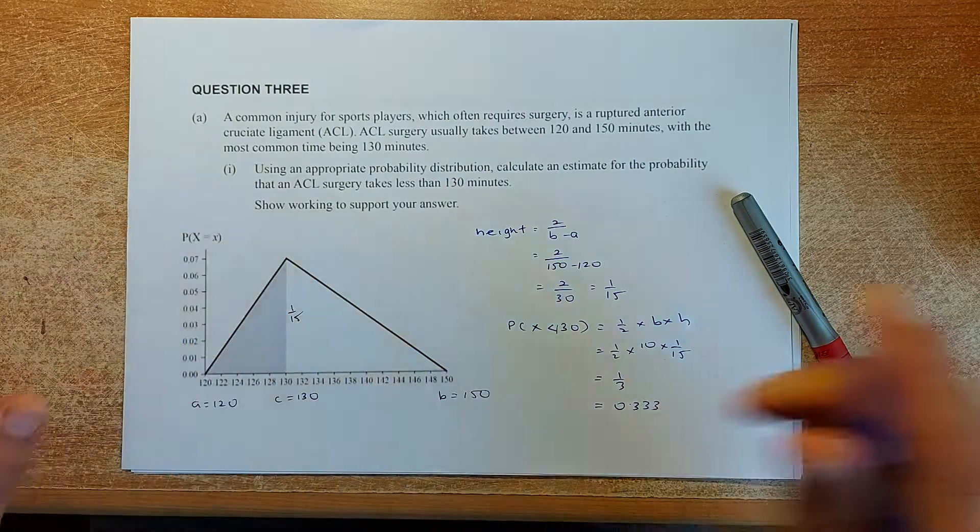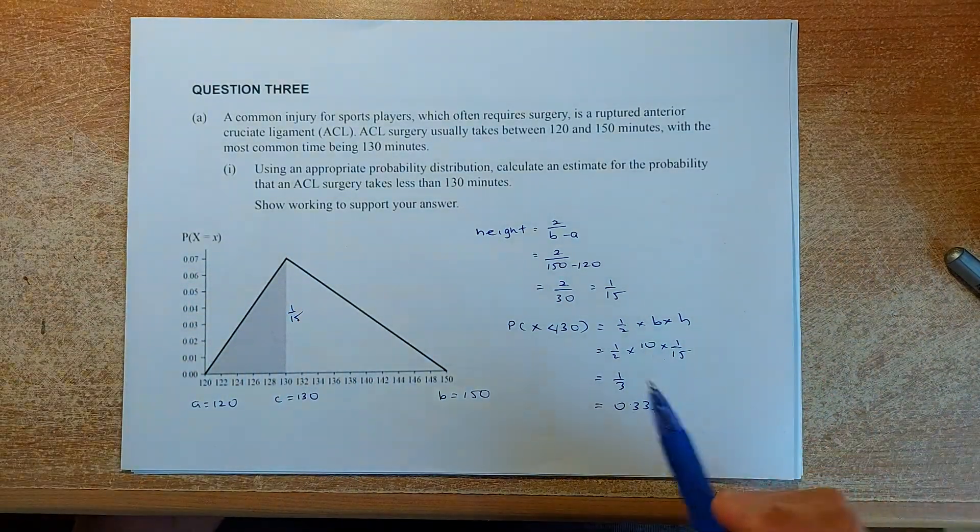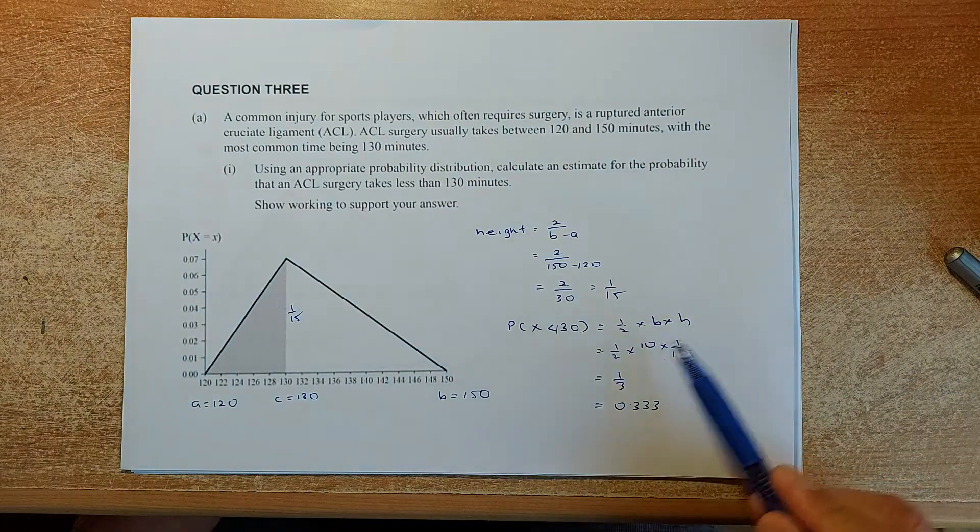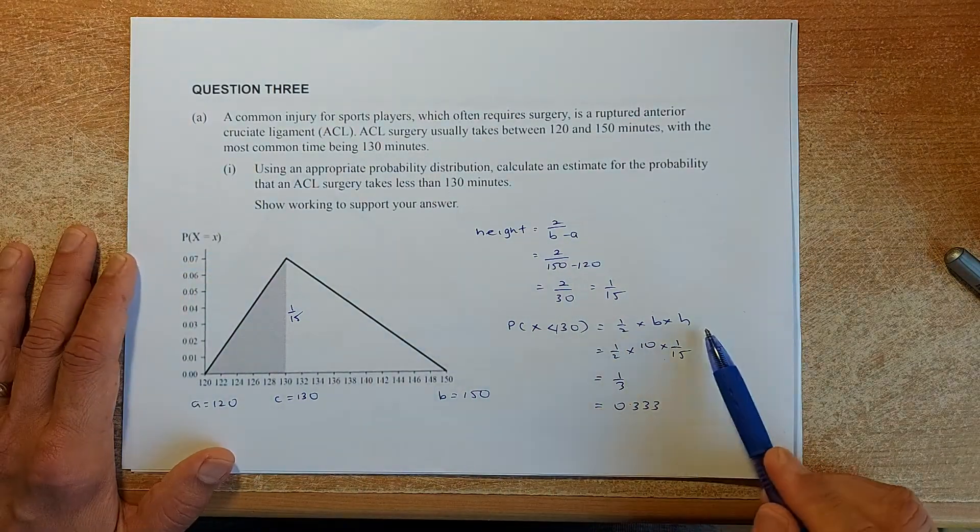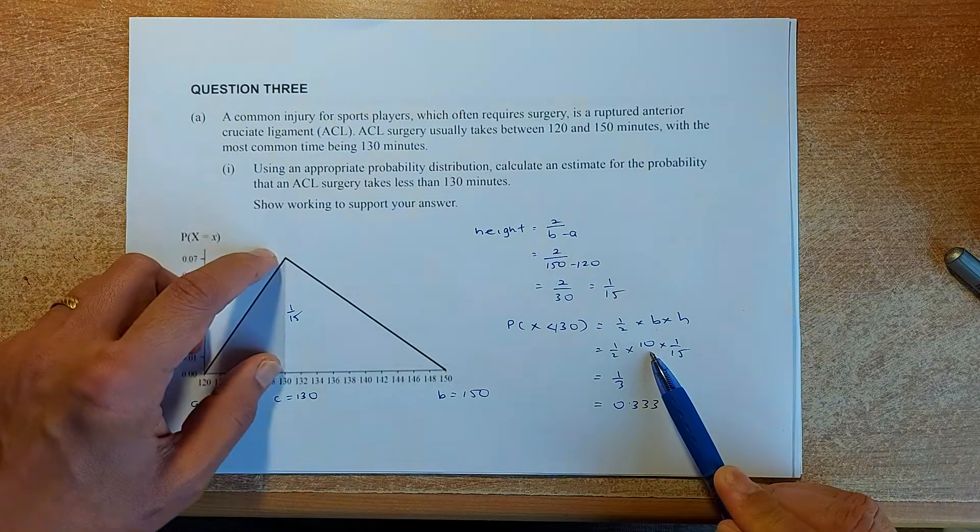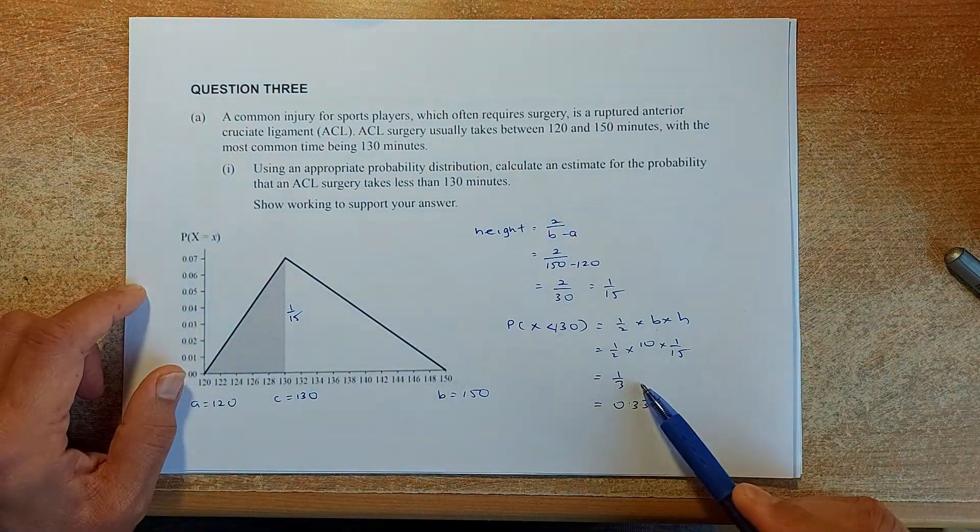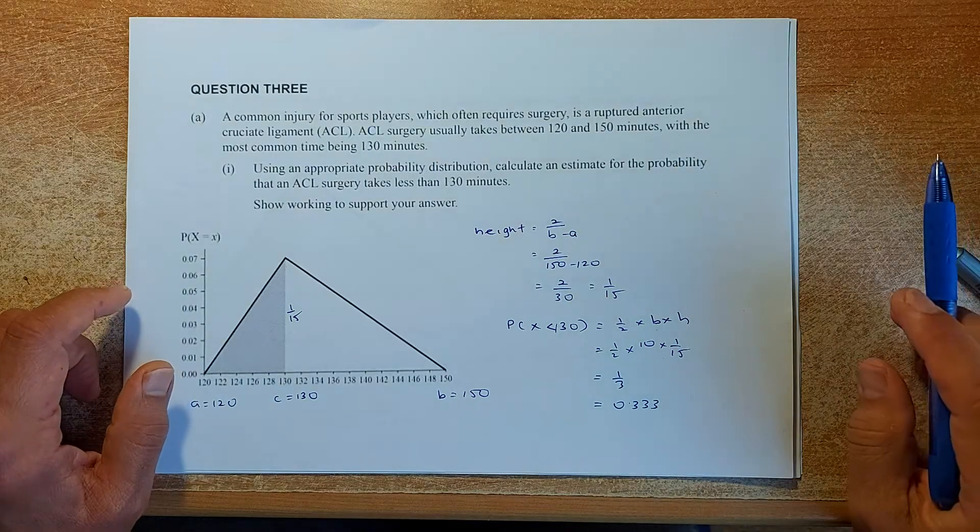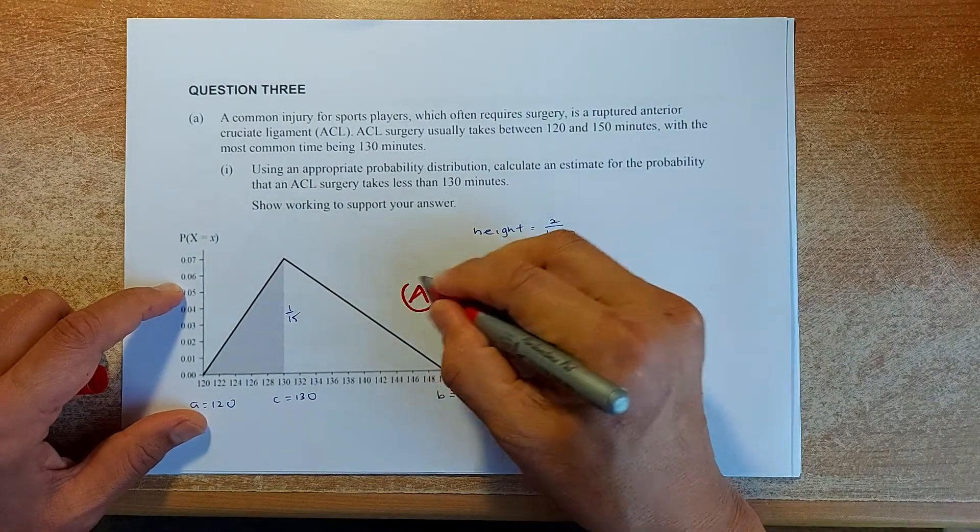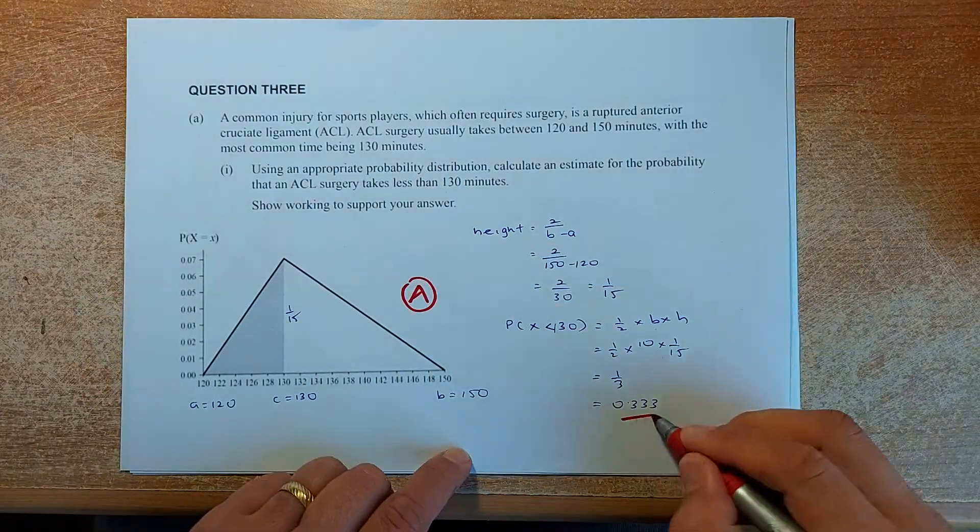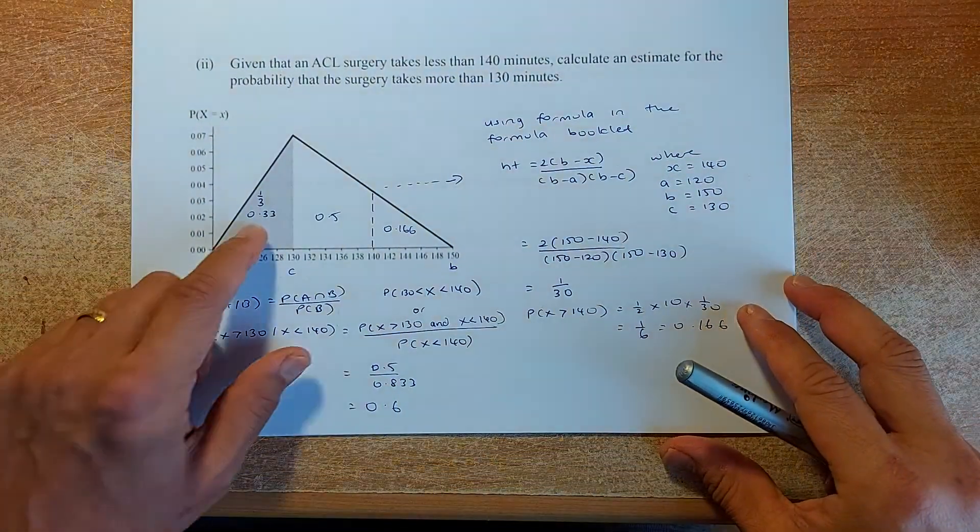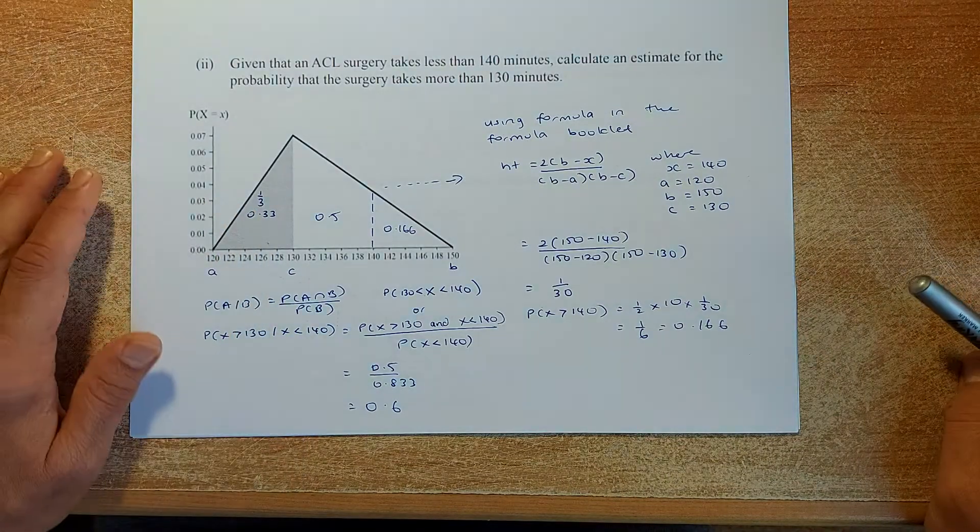To calculate the area of the triangle, use half times base times height. The area less than 130 is half times (130 minus 120) which is 10, times the height 1 over 15. Using the calculator is 1 over 3 or 0.333. That will give you an achieve. The area is 0.333 or 1 third.